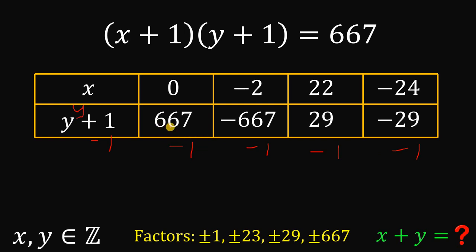We have 667 minus 1 is 666. Negative 667 minus 1 is negative 668. 29 minus 1 is 28. Negative 29 minus 1 is negative 30.